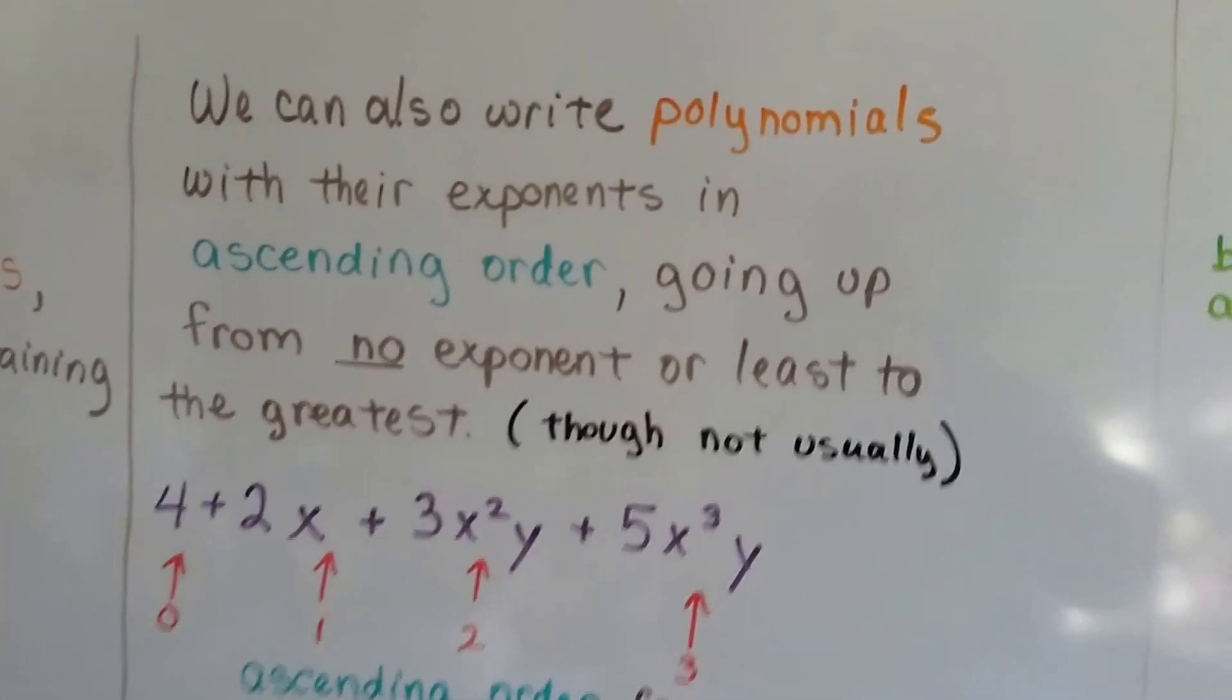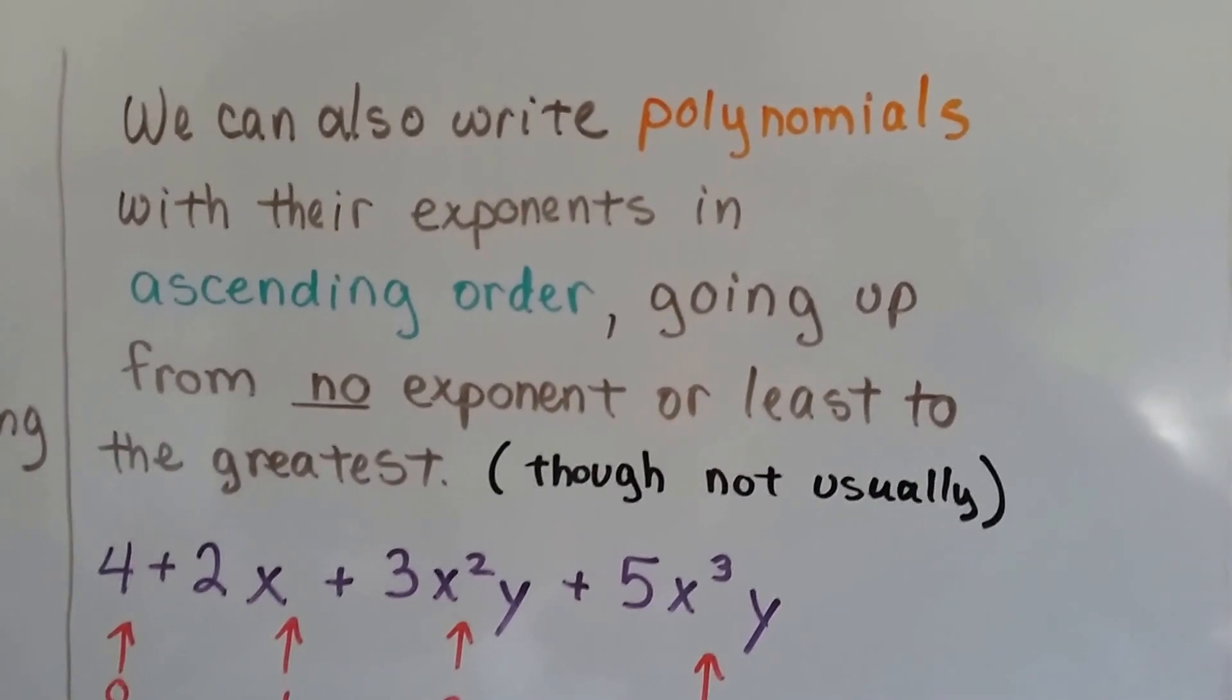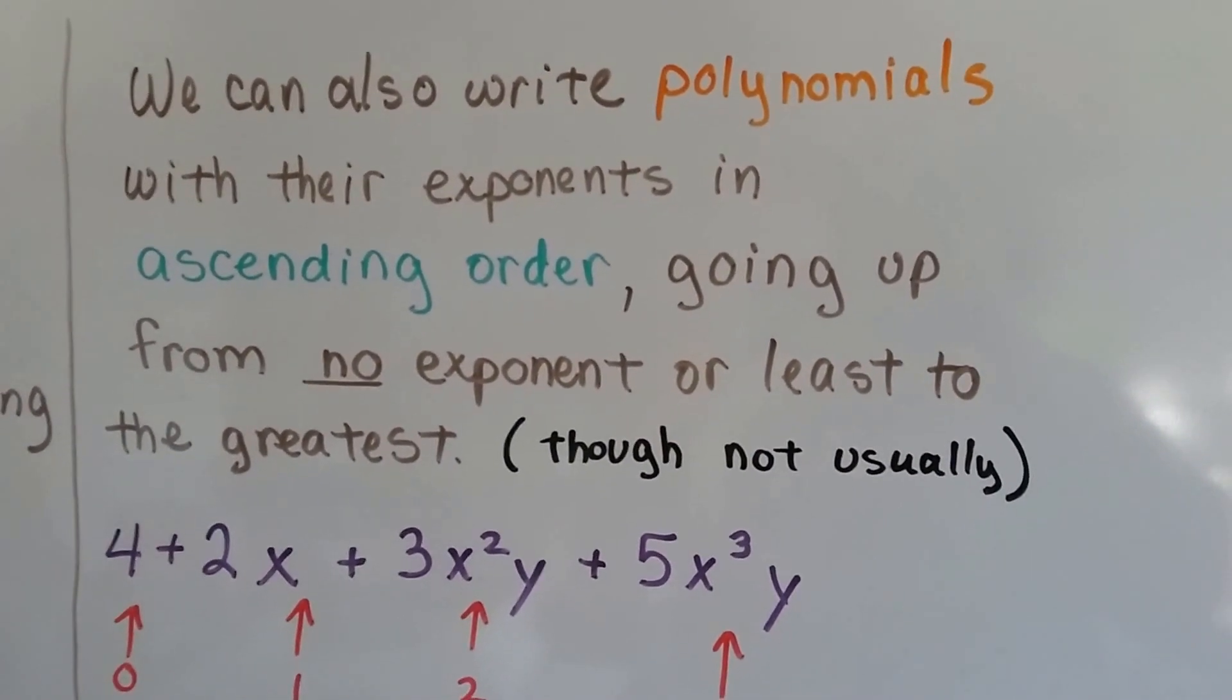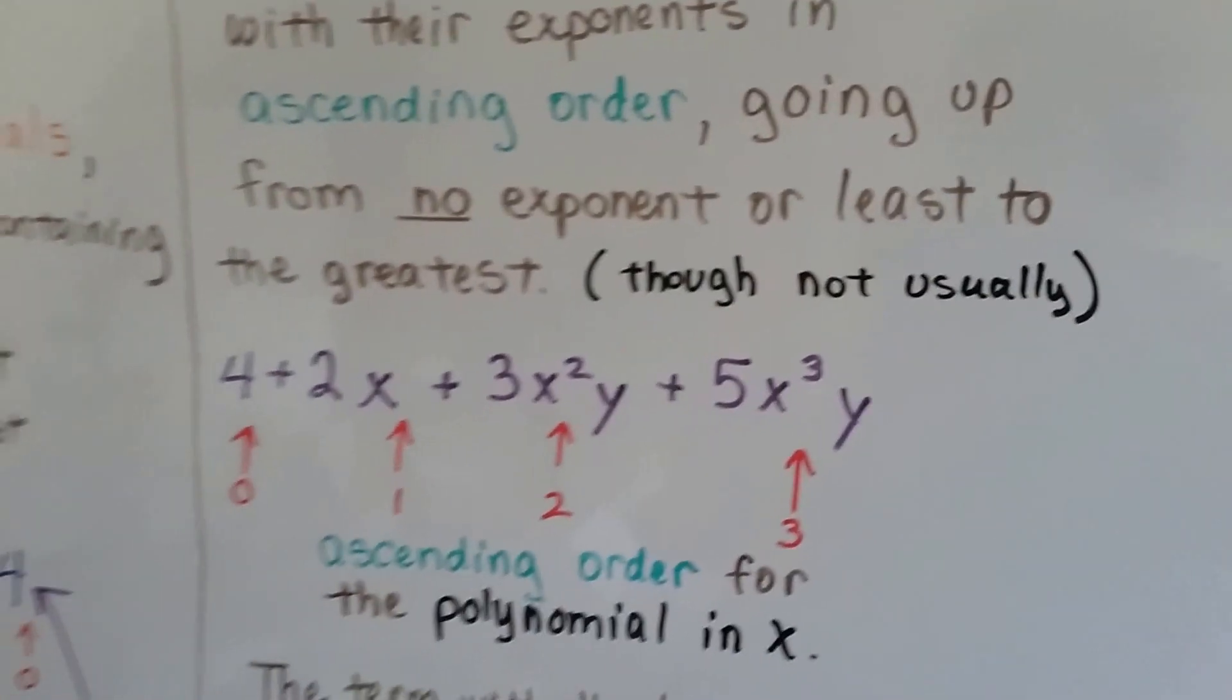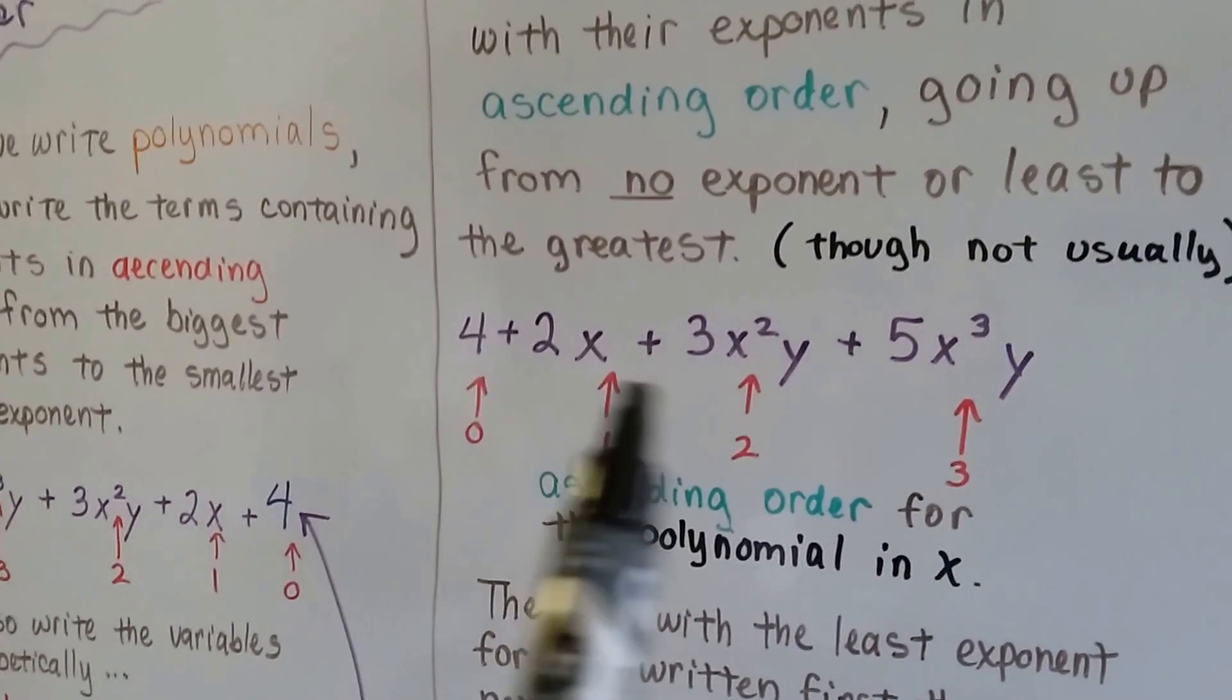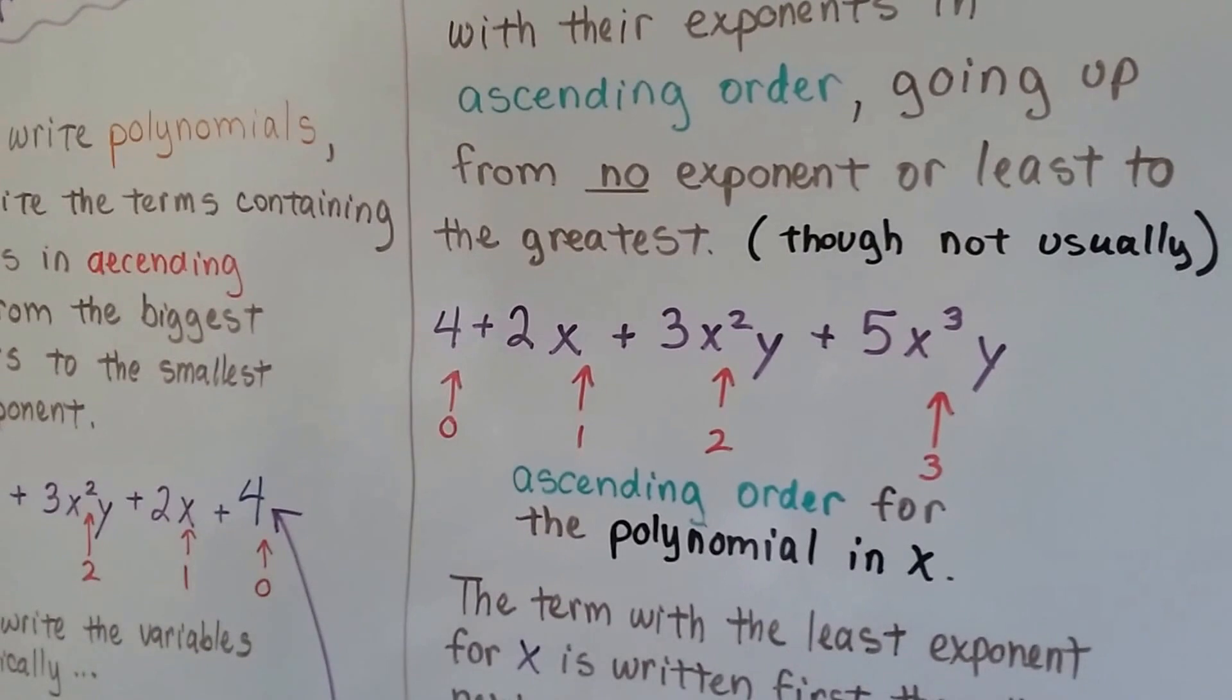We can also write polynomials with their exponents in ascending order, going up from no exponent or least to the greatest, though not usually. We usually do it in descending. So here is the exact same polynomial in x written in ascending order.